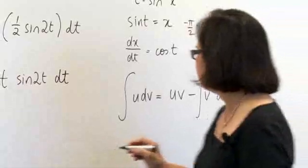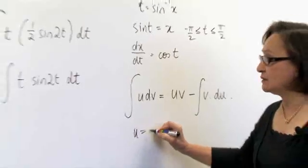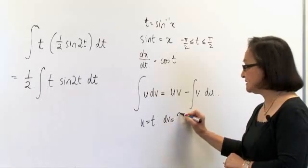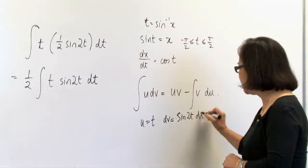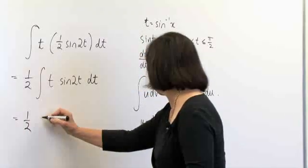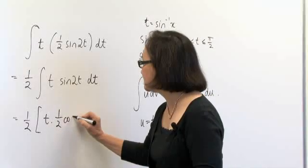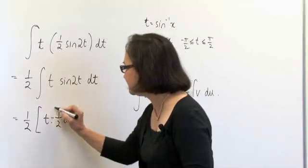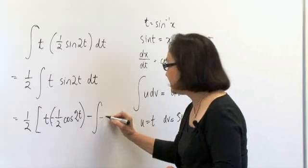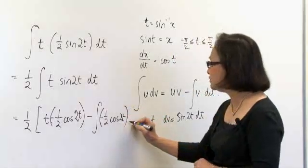So by letting u equal t and dv equals sine 2t dt, this now becomes a half. u is now going to be t, sine 2t is a half cos 2t but it's negative. So if we subtract the integral of minus a half cos 2t, your v, and your du becomes 1.